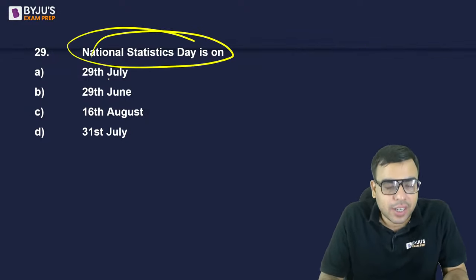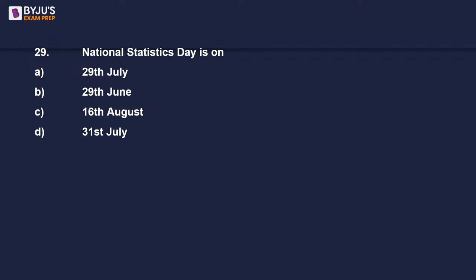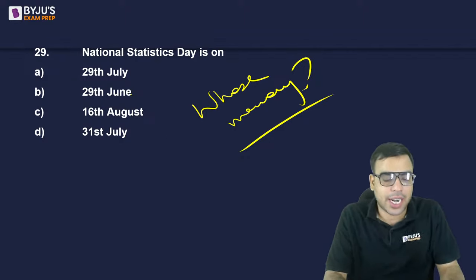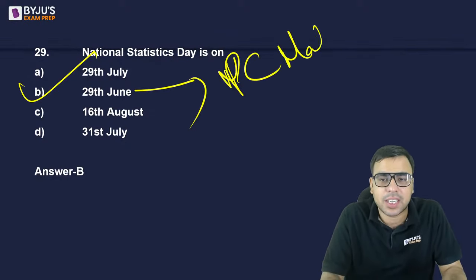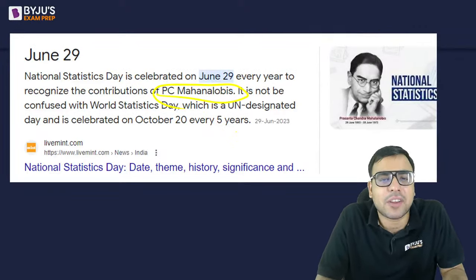National Statistics Day is on which date? 29th July, 29th June, 16th August, or 31st July? In whose memory do we celebrate National Statistics Day? The right answer is 29th June — B — in memory of PC Mahalanobis's birthday. He was a very famous statistician of India and founder of the Indian Statistical Institute in Calcutta.